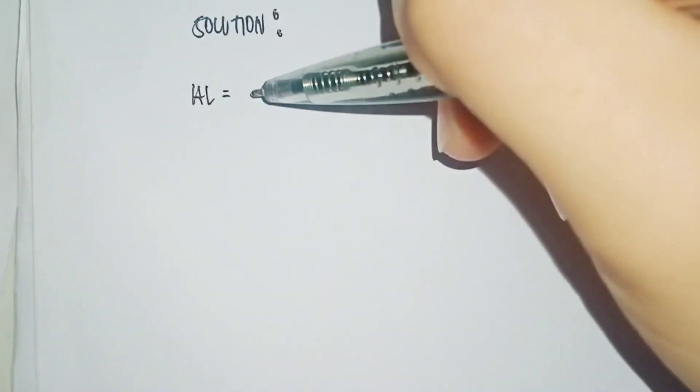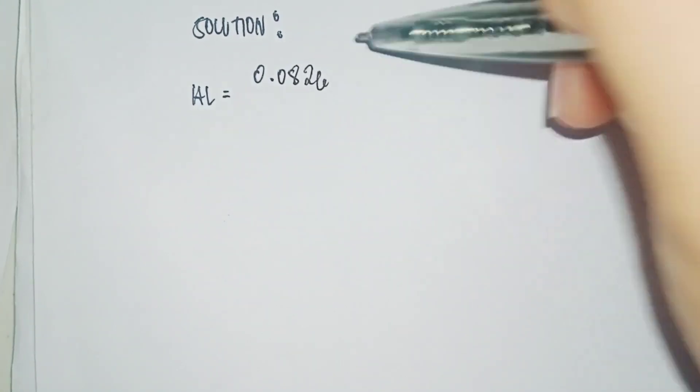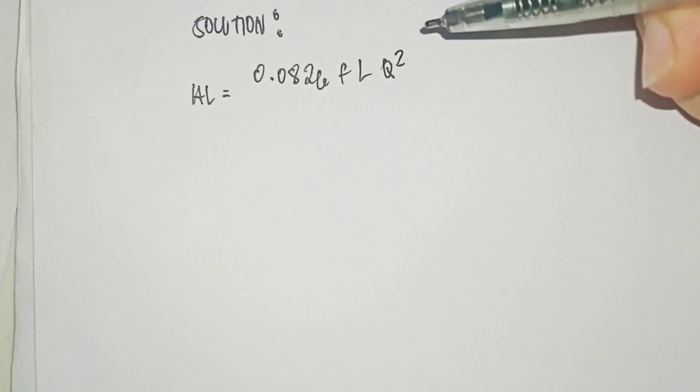So HL equals 0.0826 fL Q squared all over D raised to 5.